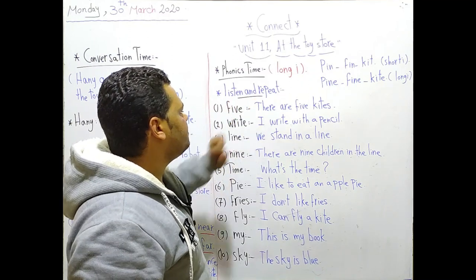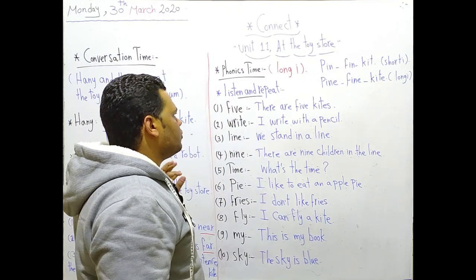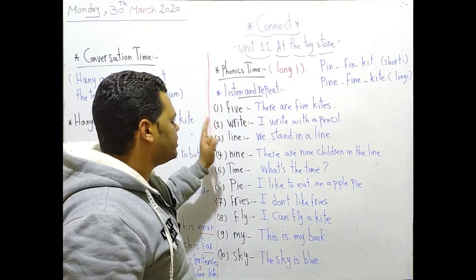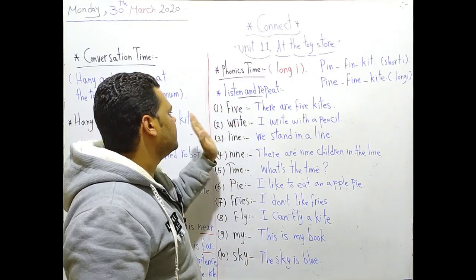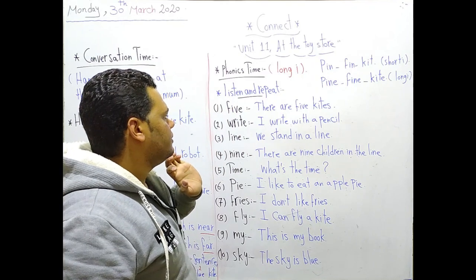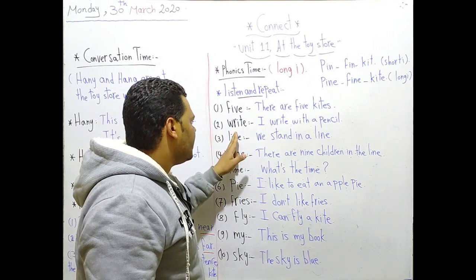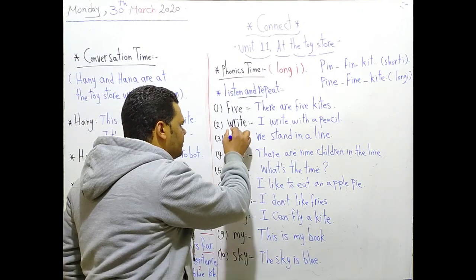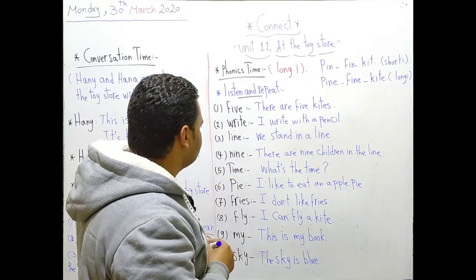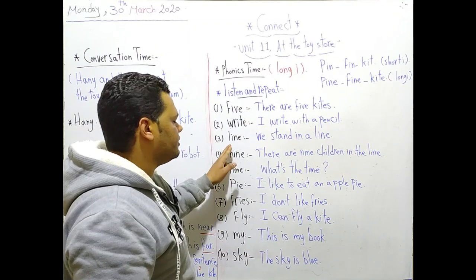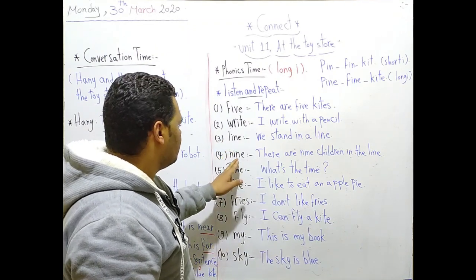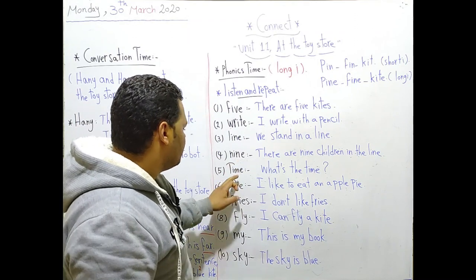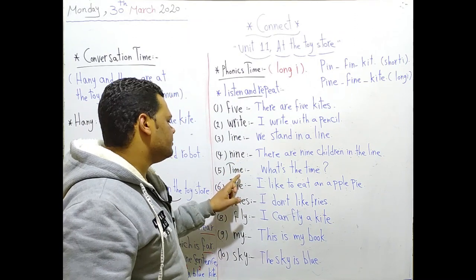Listen and repeat. We have some words which contain long I. Number one: five. Number two: write. Notice that the letter W is silent here. Number three: line. Number four: nine. Number five: time.